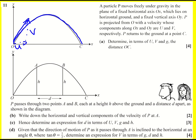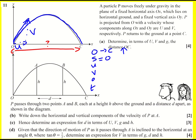We're asked to determine in terms of U, V and g the distance OC. To deal with this sort of problem we need to use SUVAT from O to C, and first I'm going to look vertically, with up as positive. Going from O to C the vertical displacement is actually zero, even though the particle goes up and then back down. So s = 0, u = V, and a = −g, since g acts downwards.